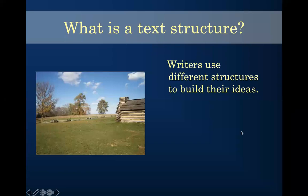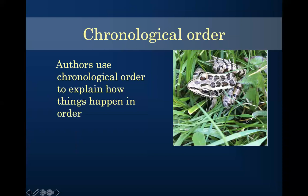We're going to continue with our text structure. We've been talking about sequencing, which is putting things in order — first, next, then, last. This can look a lot of different ways, maybe like a life cycle or different events. We also have chronological order, which is the same idea: putting things in the order they happen. Again, this may look like first, next, then, last.